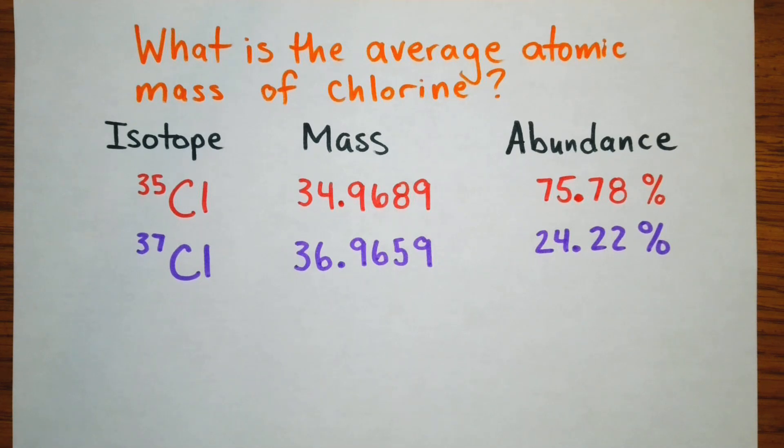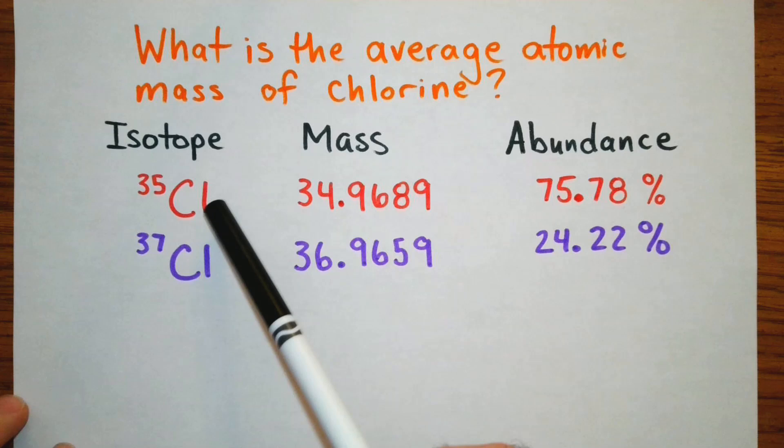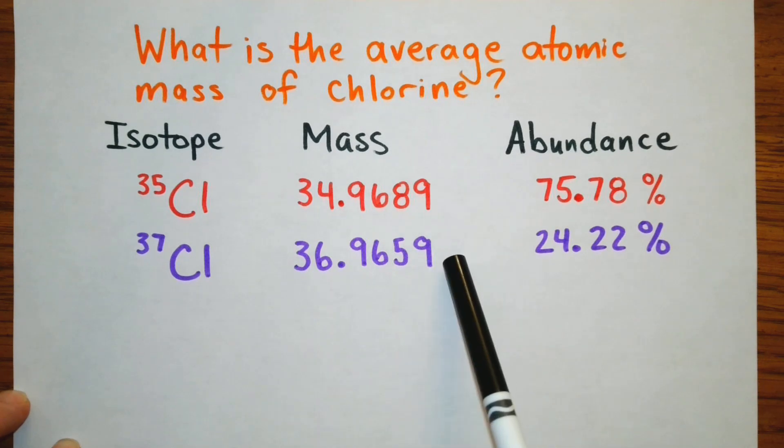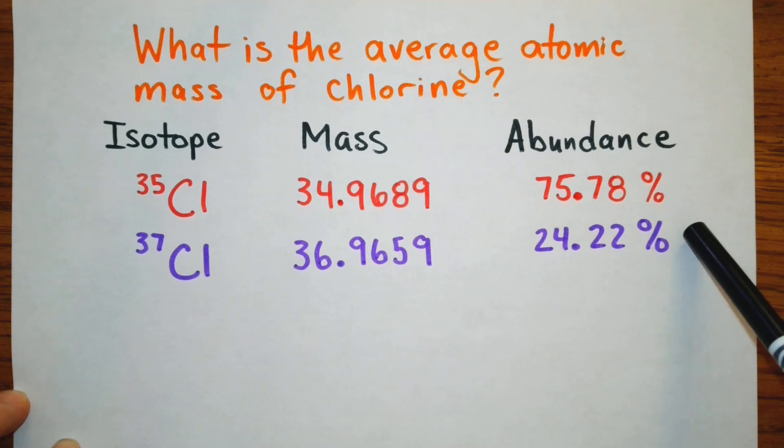To find the average atomic mass of an element you're going to need to know what naturally occurring isotopes exist. We have chlorine-35, chlorine-37. Then you'll also need to know the mass of each of these isotopes and then the relative abundance of each of these isotopes.